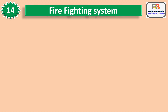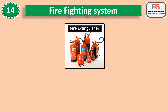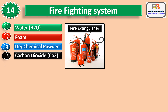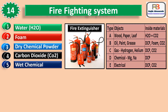Number fourteen is Fire Fighting System. There are five types of materials used in fire extinguishers: water, foam, dry chemical powder (DCP), carbon dioxide (CO2), and wet chemical. There are five types of fire: A-type for wood, paper, leaf — using H2O and CO2; B-type for oil, paint, grease — using DCP, foam, CO2; C-type for gas such as hydrogen and helium — using DCP and CO2; D-type for chemicals such as magnesium and sodium — using DCP; and E-type for electrical — using DCP and CO2.